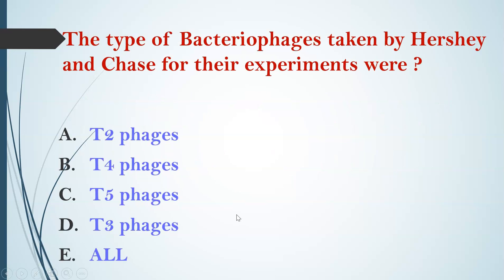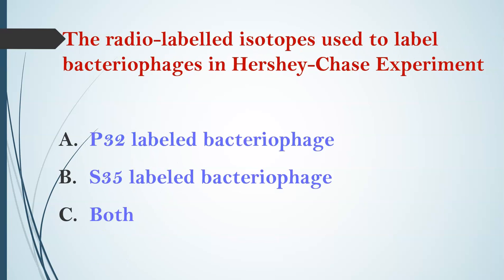Question 1: What type of bacteriophages were taken by Hershey and Chase for their experiments? Options: A) T2 phages, B) T4 phages, C) T5 phages, D) T3 phages, E) All. The answer is T2 phages.